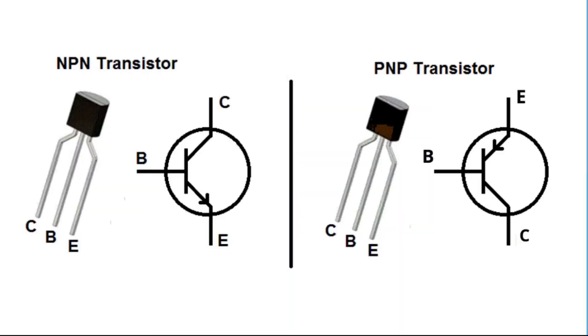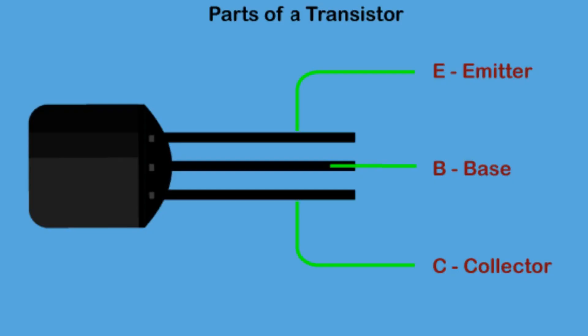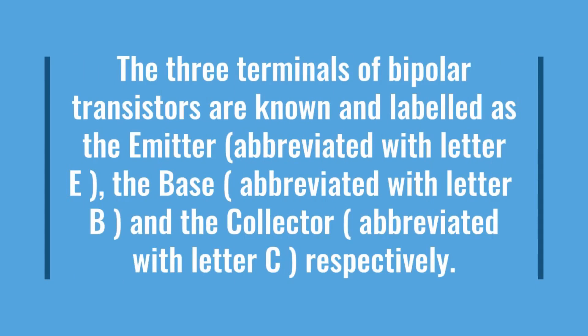There are two basic types of bipolar transistor construction, NPN and PNP. The three terminals of bipolar transistors are known and labeled as the emitter, abbreviated with letter E, the base, abbreviated with letter B, and the collector, abbreviated with letter C, respectively.